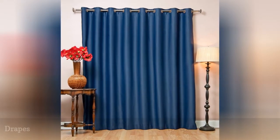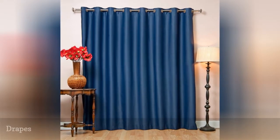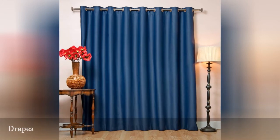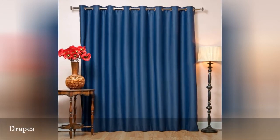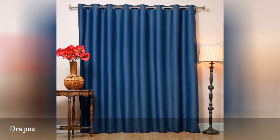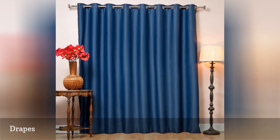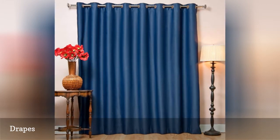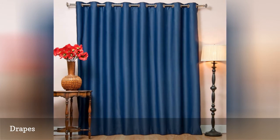Drapes are similar to curtains, sold as panels of fabric with many different lengths, colors, and patterns, but are normally made of heavier fabric, lined, pleated, and hung on a traverse rod with a string or rod pull so they can be easily opened and closed. Drapes are more formal than curtains and are used in many rooms of the house, including the master bedroom, living room, and dining room.